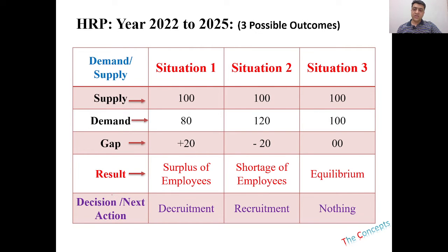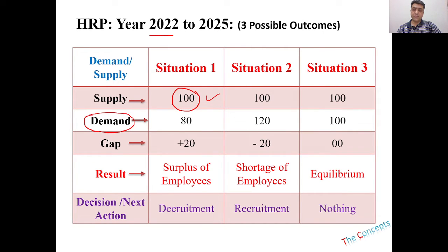Supply, in simple terms, is the number of employees you currently have — for example, 100 employees in 2022, supposing they will continue with you until 2025. Demand is the number of employees you will be needing in 2025. For instance, you might be closing down a few businesses, so instead of needing 100 people you now need only 80 people.